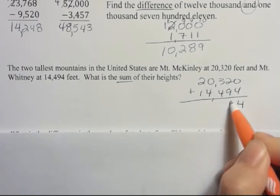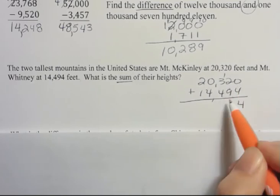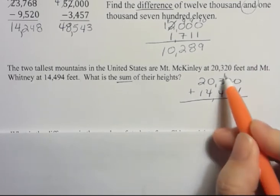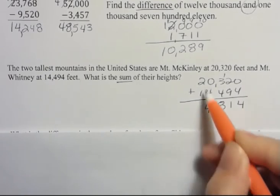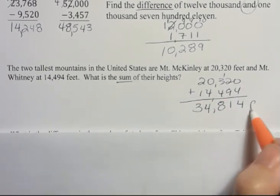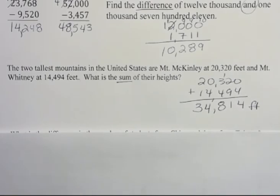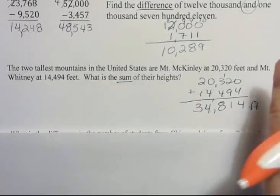I have 4. 9 plus 2 is 11. 3 plus 4 is 7, plus 1 is 8. 4. And 2 plus 1 is 3. So what I get for their total height is 34,814 feet.